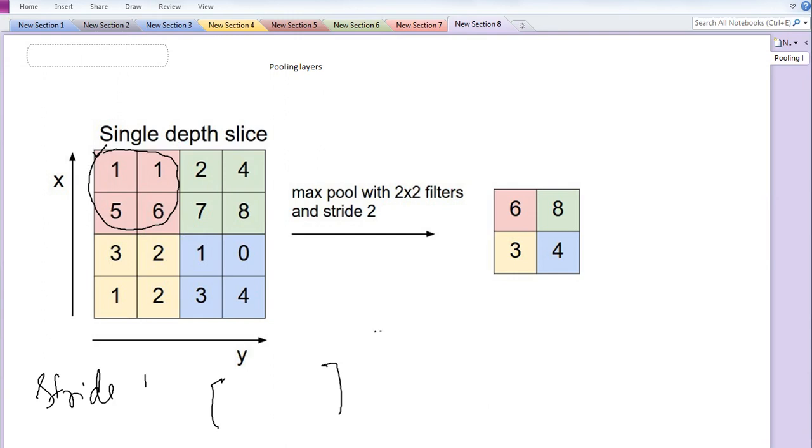The first 3x3 filter includes values [1, 5, 1, 2, 6, 7, 3, 2, 1]. You take the max value of it, which is 7, and then you can use a stride as 1.